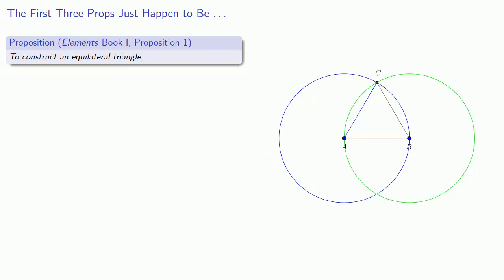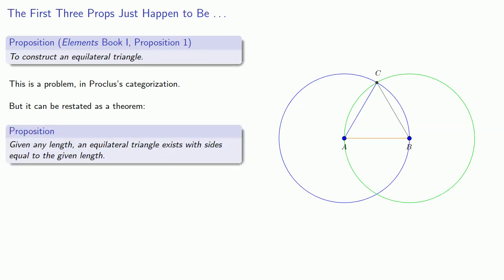Now, because this proposition resulted in the construction of an equilateral triangle, this is a problem in Proclus' categorizations. However, because of the way that Euclid proved it, it can be restated as a theorem. In this particular case, given any length, an equilateral triangle exists with sides equal to the given length. And this is generally true. Every proposition in Euclid that corresponds to a geometric construction can be reframed as a proposition that claims the existence of a certain type of geometric figure.